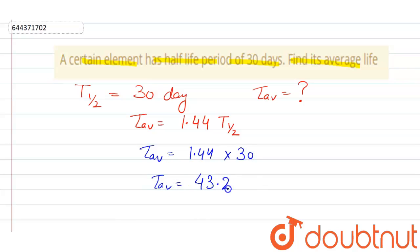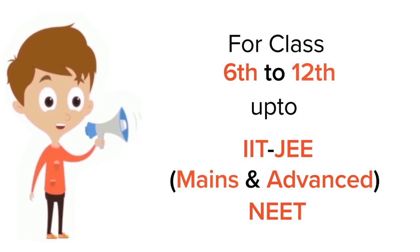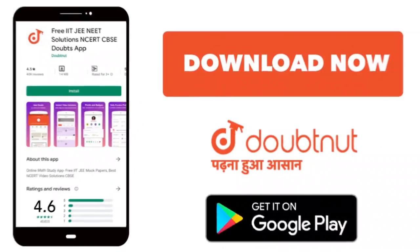43.2 days. So I hope that answers your question. Thank you. For class 6th to 12th, IIT-JEE and NEET level, trusted by more than 5 crore students. Download Doubtnet app today.